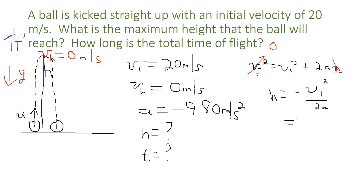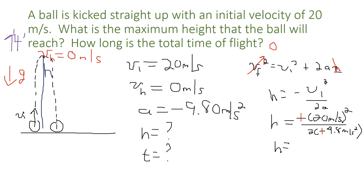Plugging in, we get negative (20 m/s)² divided by twice negative 9.8 m/s². Notice that the negative and the negative make things positive, so the height comes out positive — upward — which makes sense. Checking the units, dividing through leaves us with meters, which is exactly what we need. So we get an answer of 20.4 meters high.